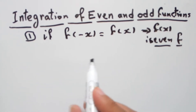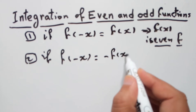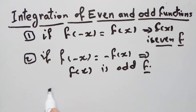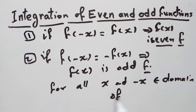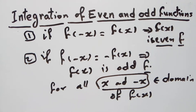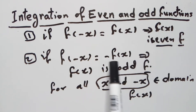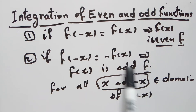Number two: if f(-x) equals negative f(x), then f(x) is an odd function — for all x where x and -x belong to the domain of f(x). If you replace x with -x and get the same function, it is even. If you get the opposite sign, it is odd. If neither condition is satisfied, the function is neither odd nor even.